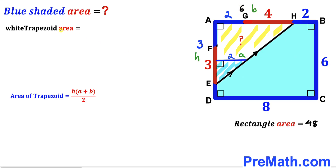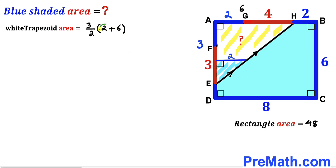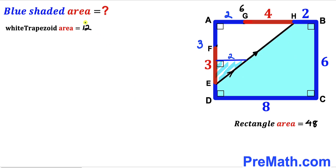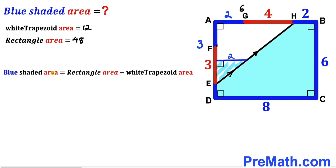The area of the trapezoid is: height 3 divided by 2, times (2 plus 6). That gives us 3 divided by 2 times 8, which equals 12 square units. So the area of the white trapezoid is 12 square units.